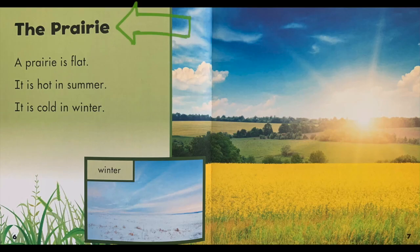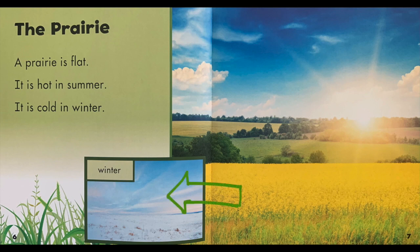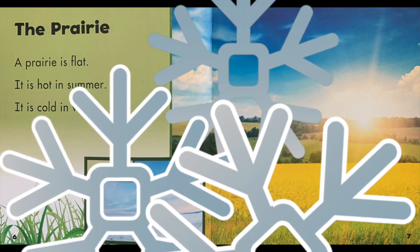Here's the next heading: The Prairie. A prairie is flat. It is hot in summer and it is cold in winter. If you look over here, here's a real picture of what the prairie looks like in the winter. What do you see on the ground? Snow.